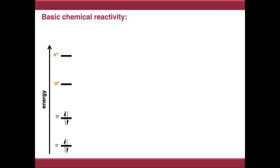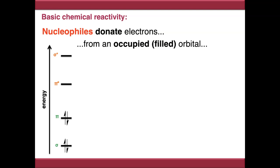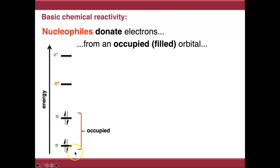In terms of chemical reactions, we're dealing with nucleophiles reacting with electrophiles. Nucleophiles donate electrons, so if we're thinking about which orbitals the electrons come from, those orbitals obviously have to be filled or occupied. In this molecular orbital diagram, with sigma and pi orbitals drawn in, we're looking at the occupied ones down here because these are the ones that contain electrons. When our nucleophile reacts with an electrophile, it's one of these orbitals that donates the electrons.